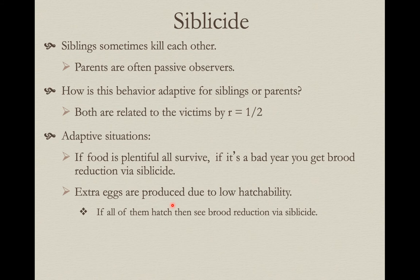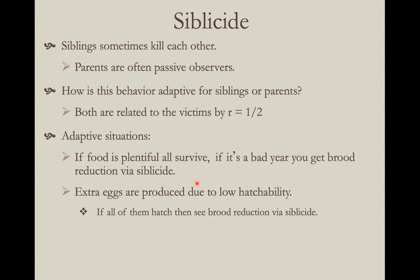The first situation is an unpredictable environment where you lay eggs assuming the best — that food will be plentiful and all will survive. But if there's not enough food to go around when they hatch, you need a way to reduce the brood. This is called brood reduction via sibilicide. Birds that practice this often hatch their young asynchronously, so the youngest to hatch — if there's not enough food — can be killed off more easily by bigger brothers and sisters.